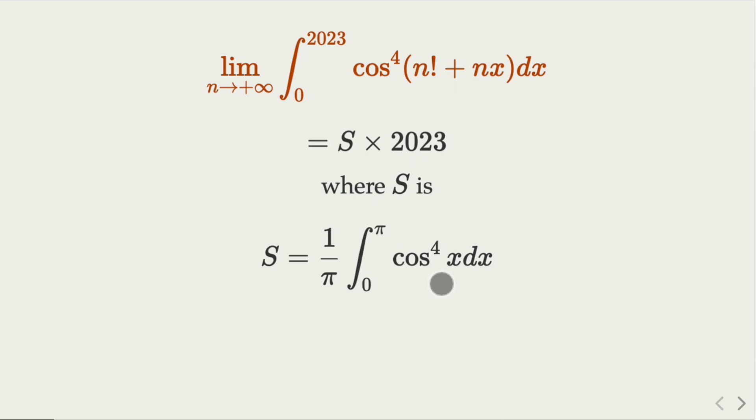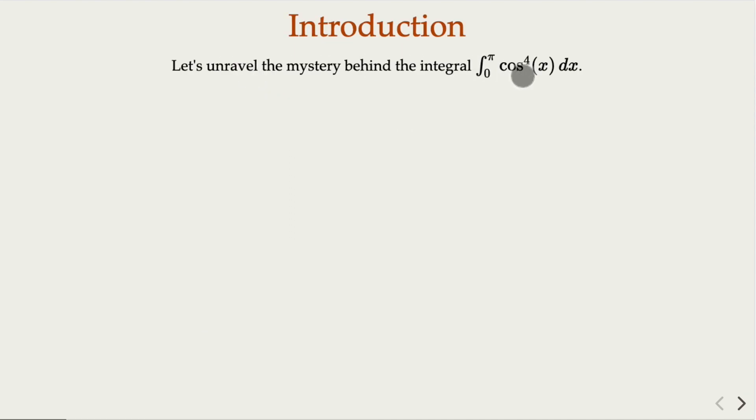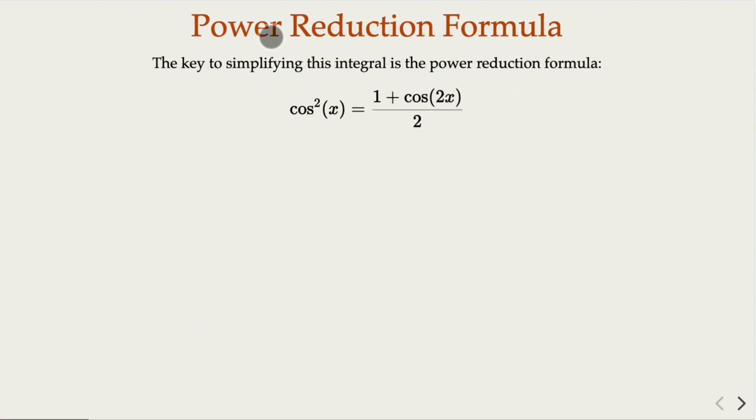Let's come down to the trig identity here that's called power reduction formula. So that's average value. How do we do this? How do we evaluate this value here? We use power reduction formula that relates cosine squared with cosine 2x. Sometimes people refer to this as a half angle formula or power reduction formula.